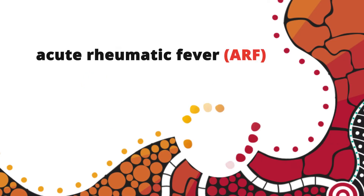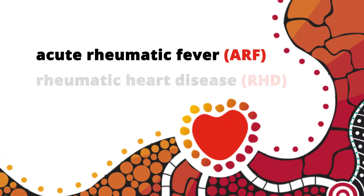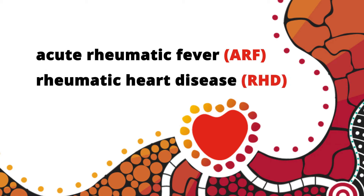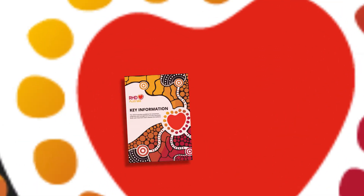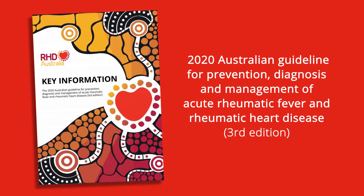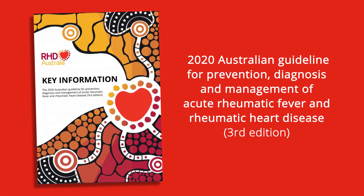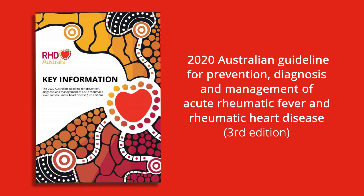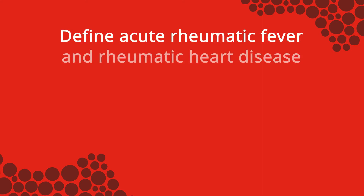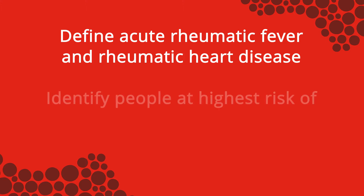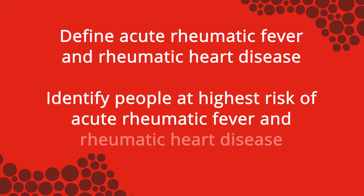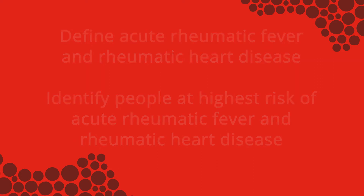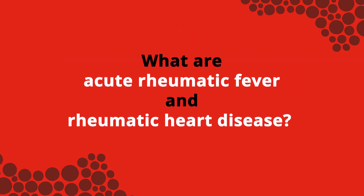The impact of acute rheumatic fever (ARF) and rheumatic heart disease (RHD) is often under-recognized in Australia. Information for this introductory video is derived from the 2020 Australian guideline for prevention, diagnosis and management of acute rheumatic fever and rheumatic heart disease, third edition. The learning objectives are to define acute rheumatic fever and rheumatic heart disease, and to identify people at highest risk.